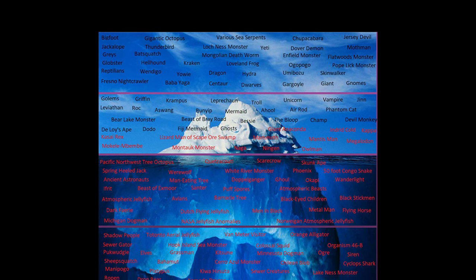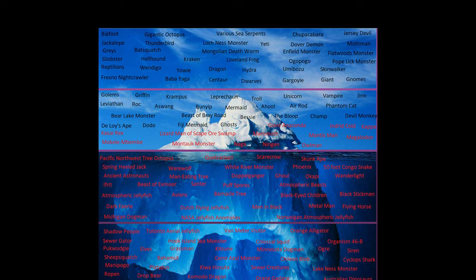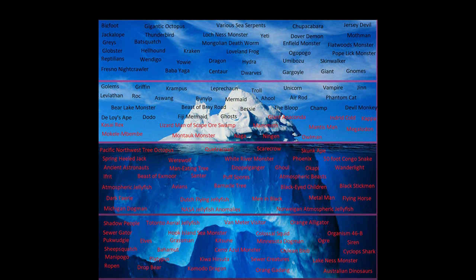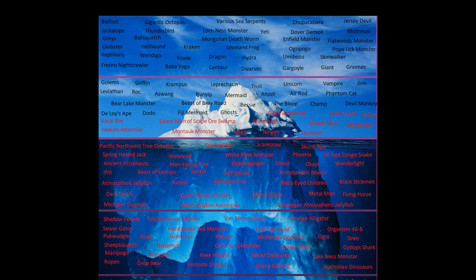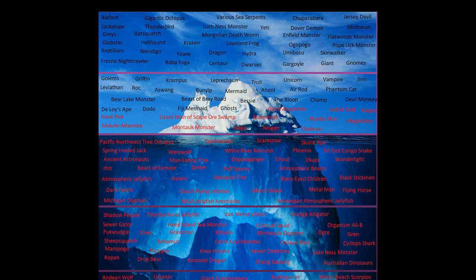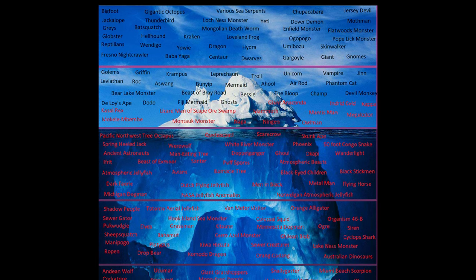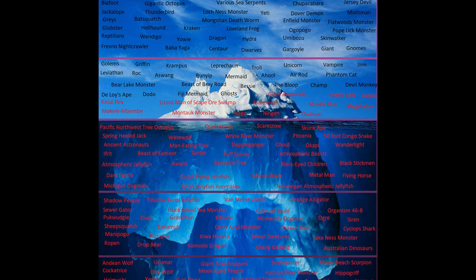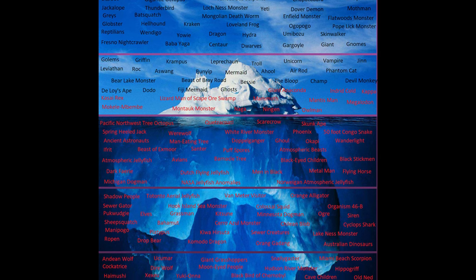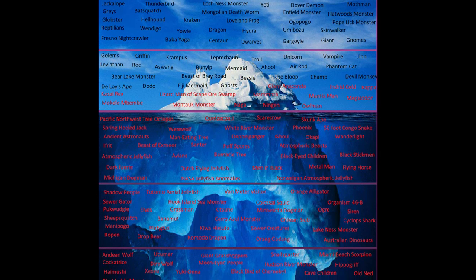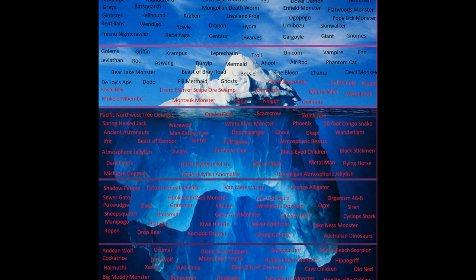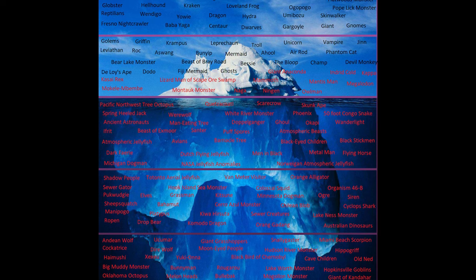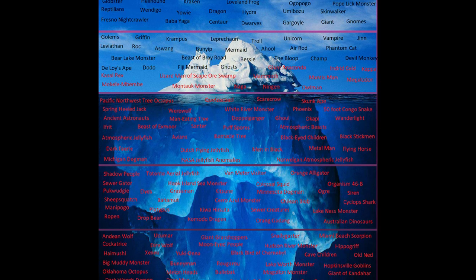Each video will be centered around one cryptid and will include some information about the creature, although if several creatures in one tier are very similar they might be grouped into the same video. The medium and maybe the style might vary from video to video. As is typical of iceberg content, I'll be focusing on one tier at a time from top to bottom, selecting whichever creature I feel like drawing from whatever tier I'm working on. The iceberg chart I'll be basing this off of will be linked in the description — it was created by Jimbo Seth on Reddit.